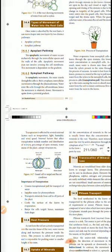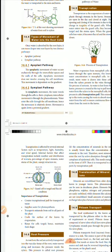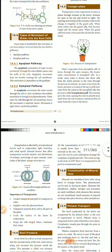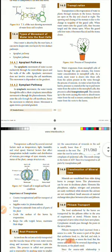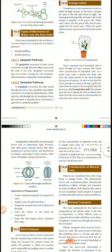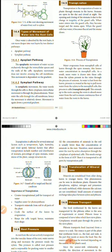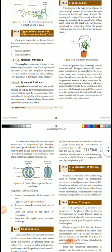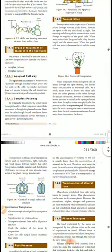There are types of movements in root cells. What are they? Apoplastic pathway and symplastic pathway — important question, note that. Apoplastic pathway: the apoplastic movement of water occurs exclusively through the intercellular spaces and the walls of the cell. Apoplastic movement does not involve crossing the cell membrane. This movement is dependent on the gradient. Symplastic pathway: movement in which water travels through the cells. The cytoplasmic intercell movement is through the plasmodesmata. Water enters the cells through the cell membrane, hence the movement is relatively slower. Movement is again down a potential gradient.